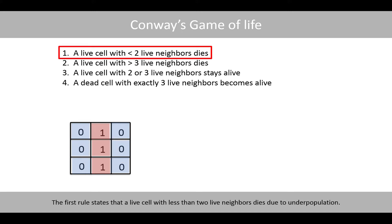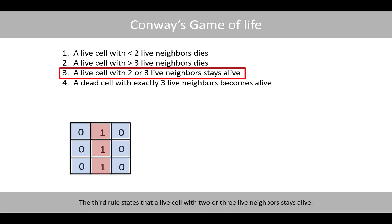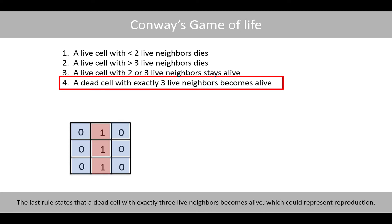The first rule states that a live cell with less than two live neighbors dies due to underpopulation. The second rule states that a live cell with more than three live neighbors dies due to overpopulation — it is too crowded to stay alive. The third rule states that a live cell with two or three live neighbors stays alive. The last rule states that a dead cell with exactly three live neighbors becomes alive, which could represent reproduction.